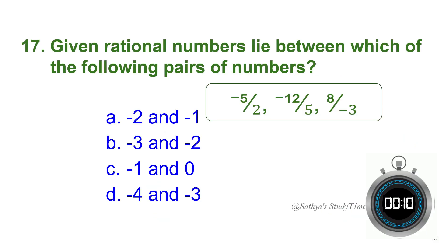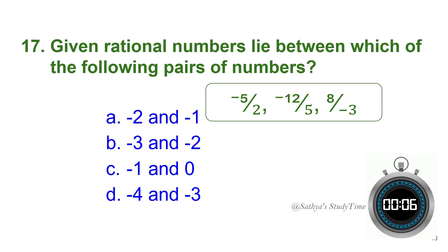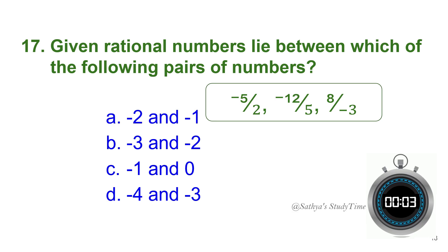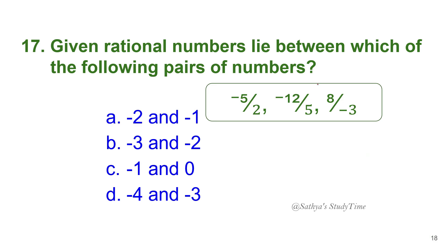Seventeenth question: The given rational numbers lie between which of the following pairs of numbers? Your time starts now. Simplifying the given numbers gives approximately minus 2.5 for each, so they lie between minus 3 and minus 2.